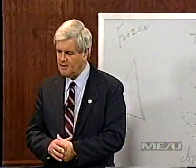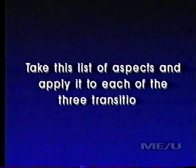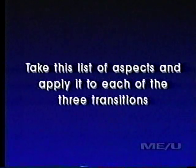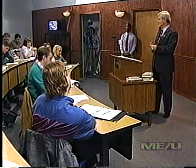And so these things keep cycling. What I'd like you to think about doing — and the way I'd recommend — is to take each of these aspects and start applying it to each of the three transitions. How did family change in each wave? How did work change in each wave? How are things different?